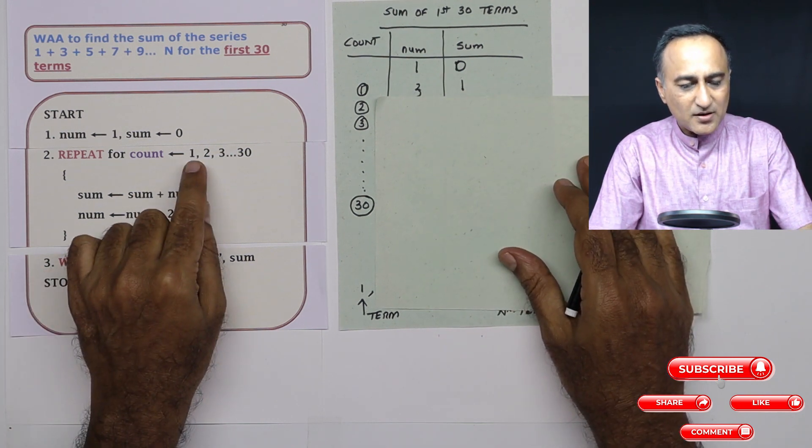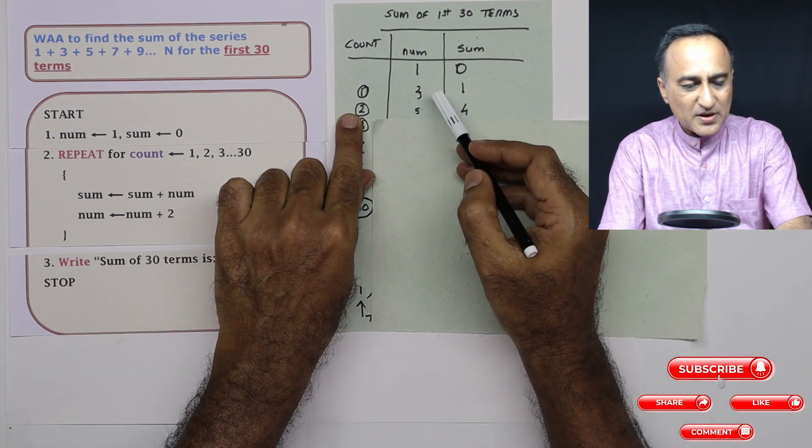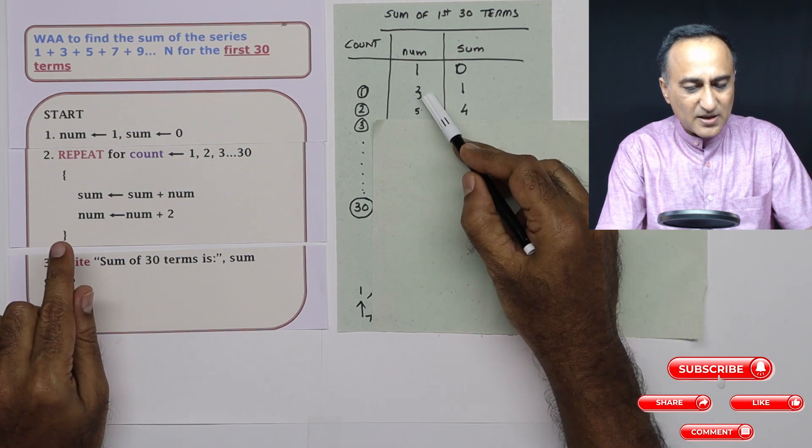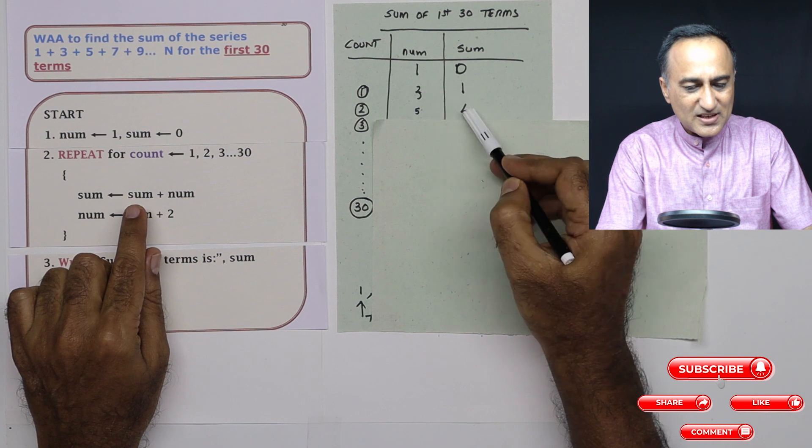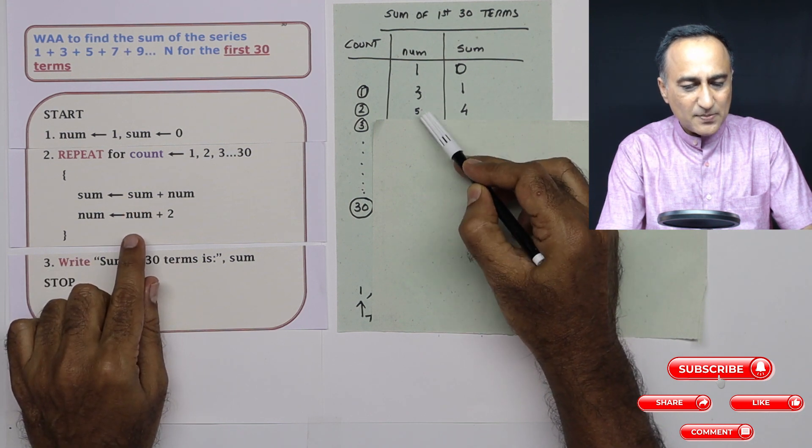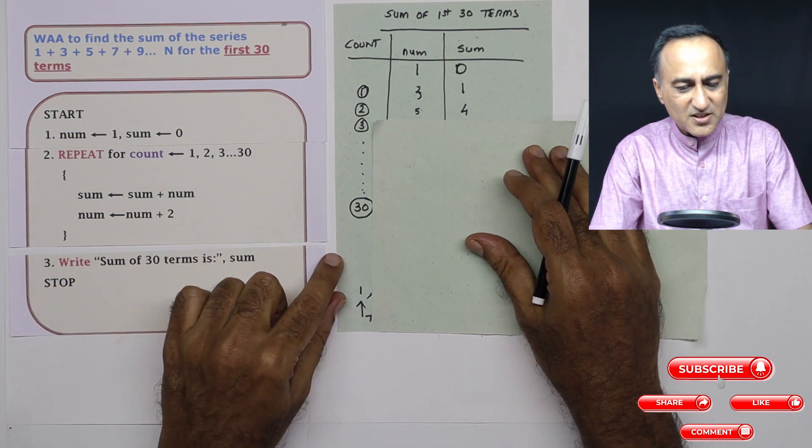I go back here for when count is 2. Number has still remained 3. First sum is 1 plus 3 is 4. Number is 3 plus 2 is 5 at this step.